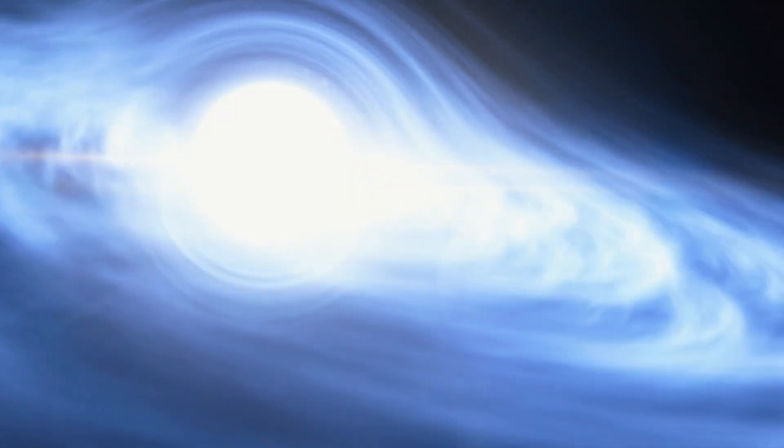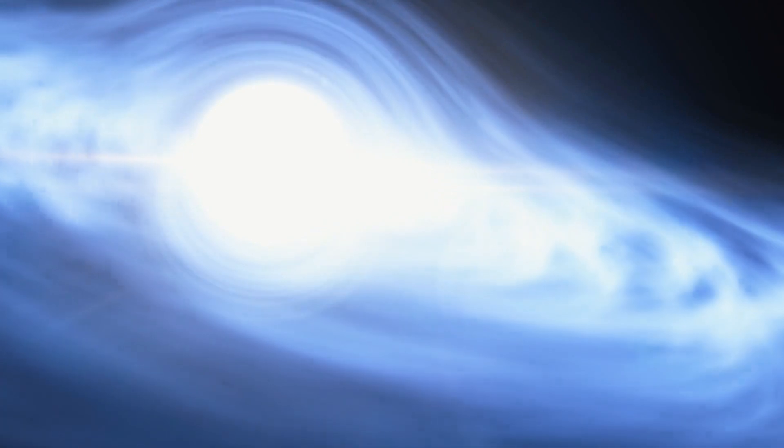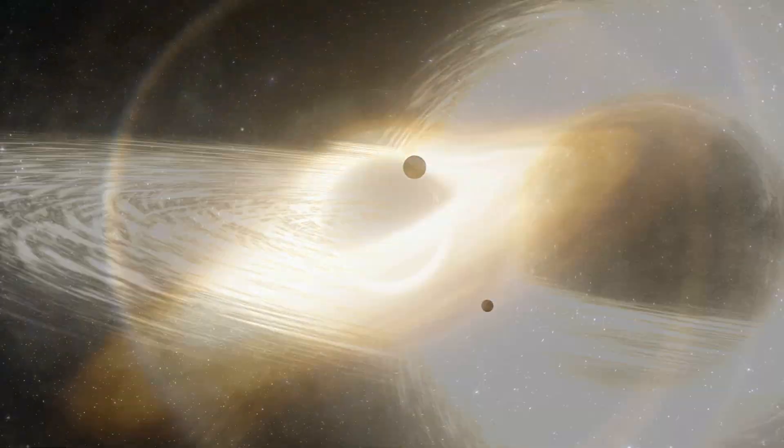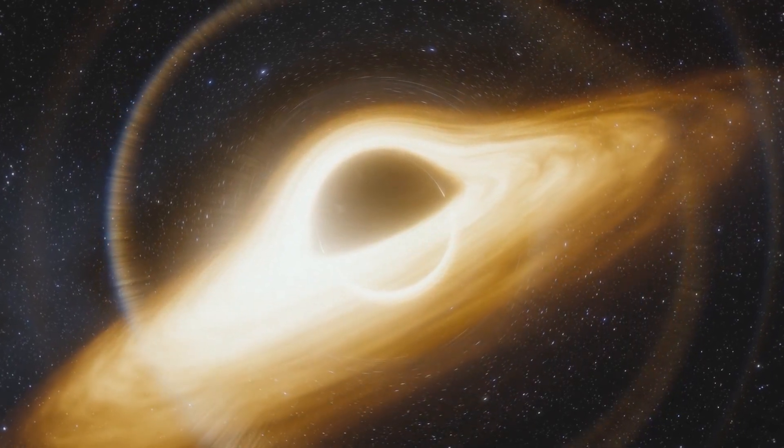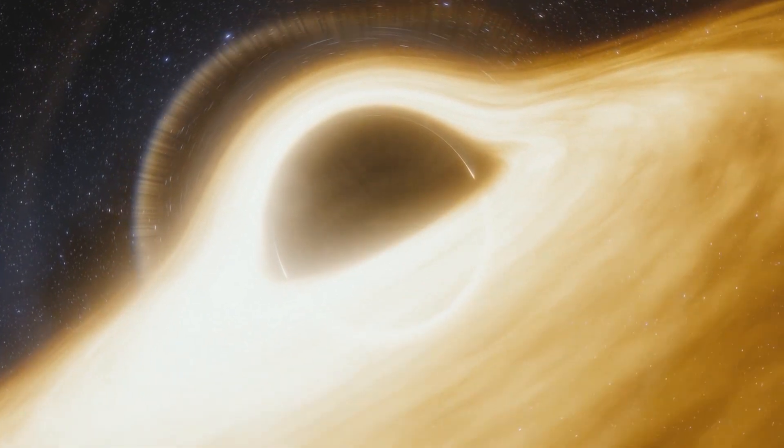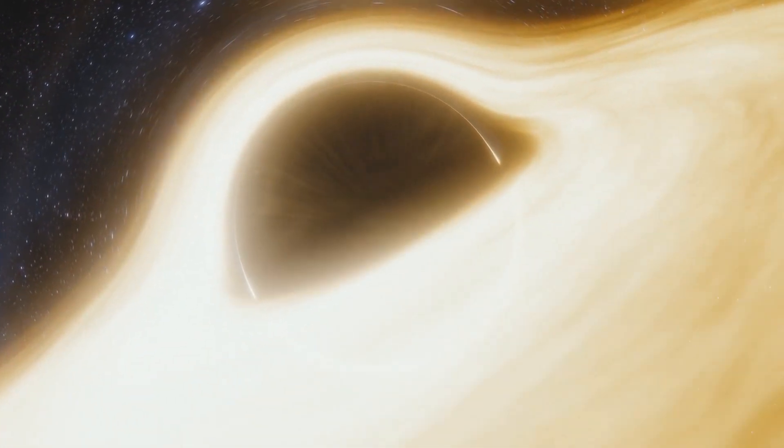A white hole, in simple terms, is a theoretical celestial body predicted by Einstein's theory of general relativity. This theory, which revolutionized our understanding of gravity, also gave birth to the concept of black holes and their less famous counterparts, white holes.